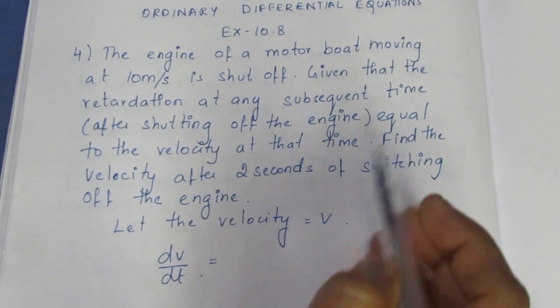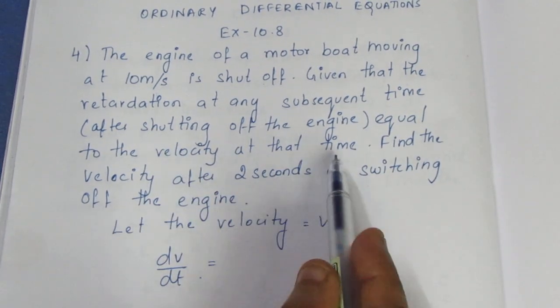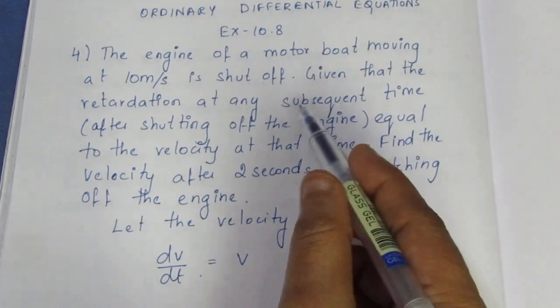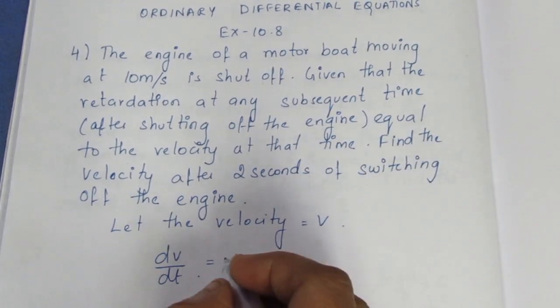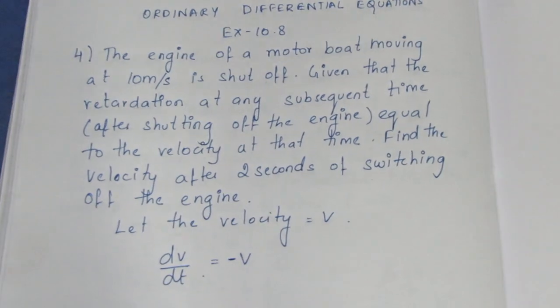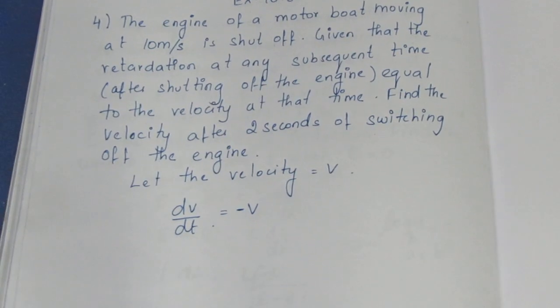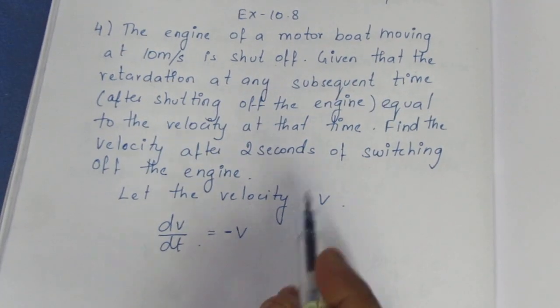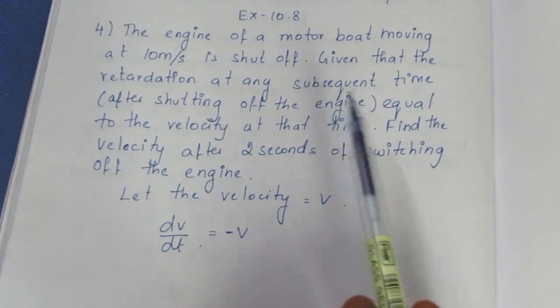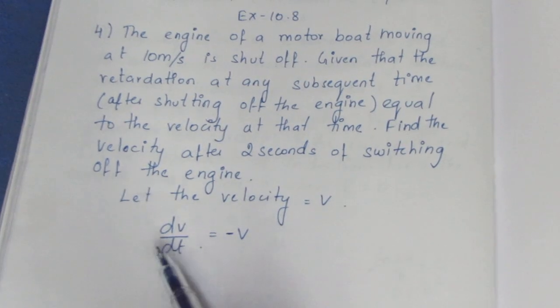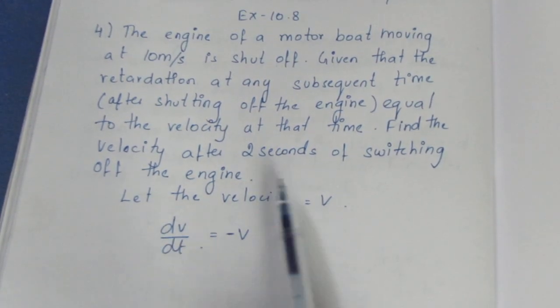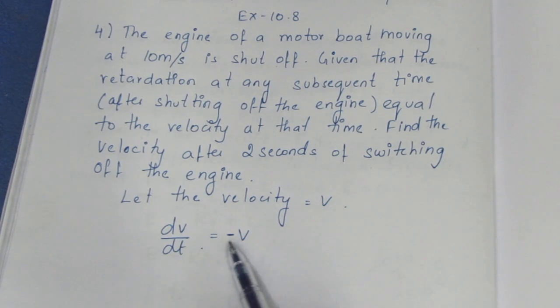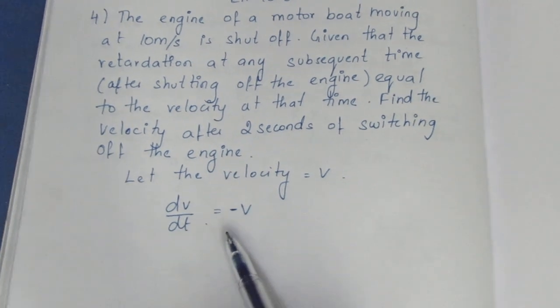The retardation is equal to the velocity at that time. But when you shut off, the velocity decreases, so you will get a minus sign. If we understand the question, the retardation gets a negative sign. When you shut off, velocity decreases - this is the change that's happening, so you get a negative sign.